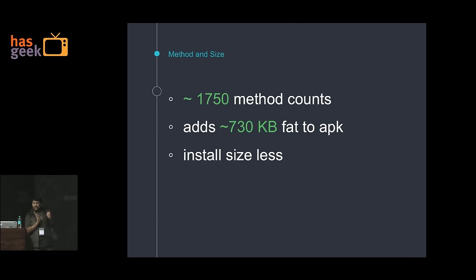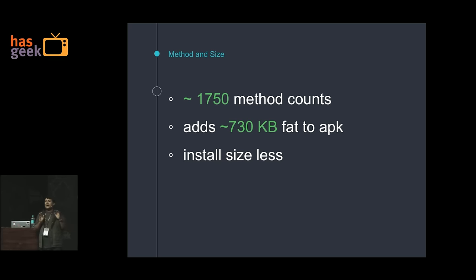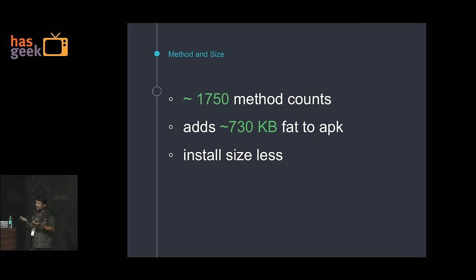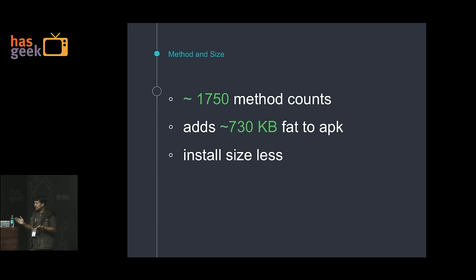One disadvantage of Realm is the method size — it adds 1,750 method counts into your app. That is large compared to libraries like Picasso, but still manageable. It also adds a file size of 730 KB to your APK. Especially in India where app sizes matter, this prevents many people from using Realm. The reason is its common C++ core — it supplies .so files for different platforms like ARM64, x86. However, you can do multiple APKs for different platforms, which is a bit painful to test but simple to configure in your Gradle file, and it will reduce the size significantly.